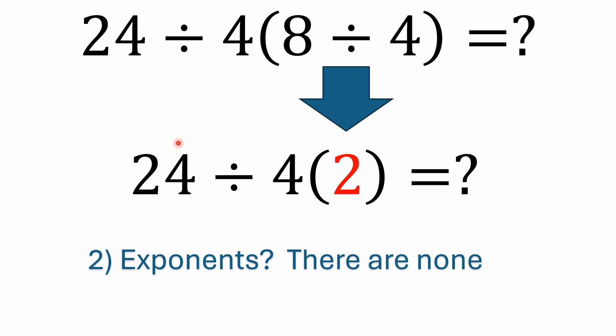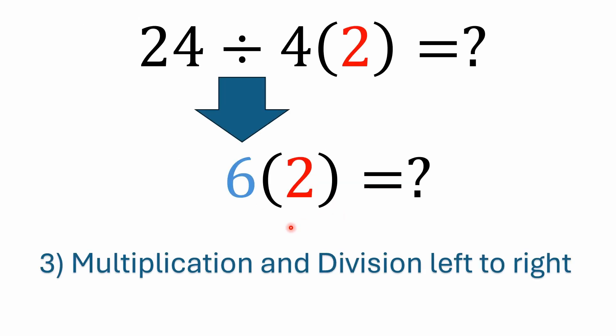According to PEMDAS and BODMAS, again, you solve what is inside of the parentheses. So starting out with this, we do have parentheses, right? We have eight divided by four, which is two. The second step, exponents? There are none. We don't have any exponents here. So we move on to step number three, which is our multiplication and division left to right. So following PEMDAS and BODMAS, that would mean you do the 24 divided by 4 first. 24 divided by 4 is 6. And then we're left with the multiplication. So 6 times 2 is what? Well, that's easy. That's 12.